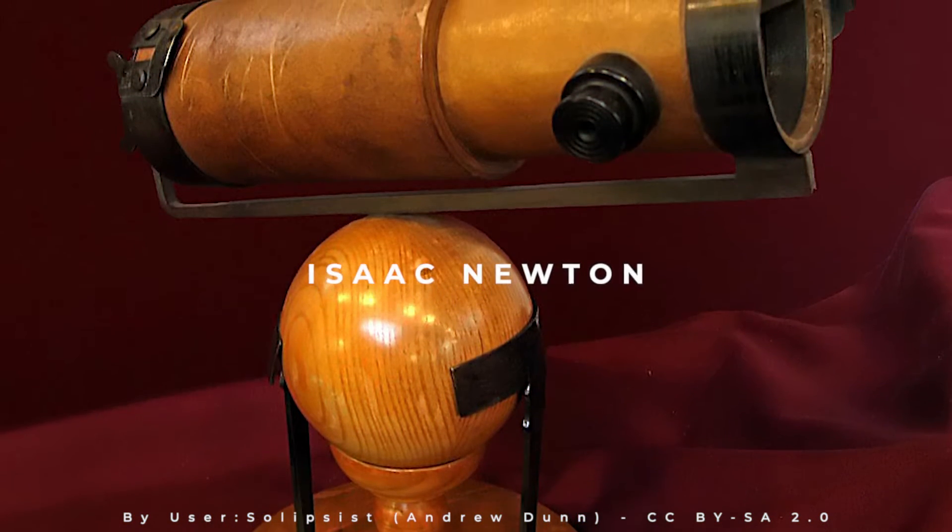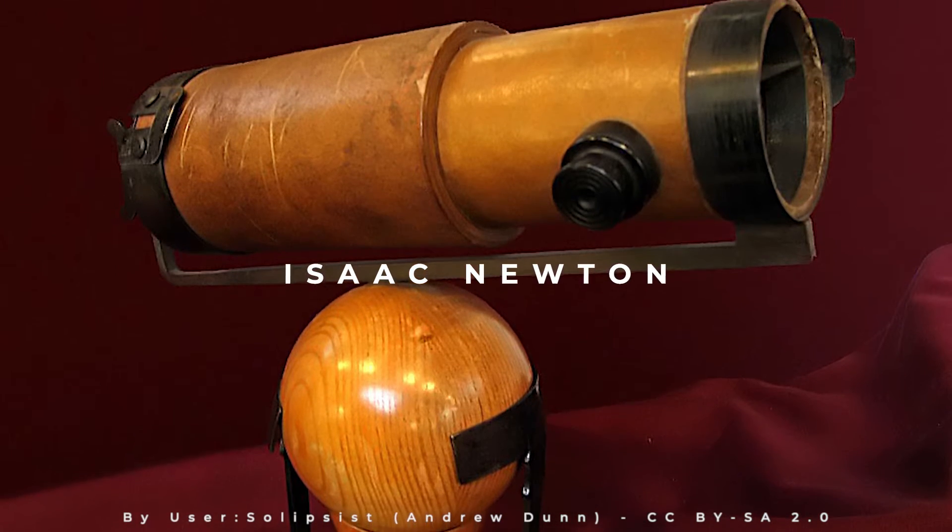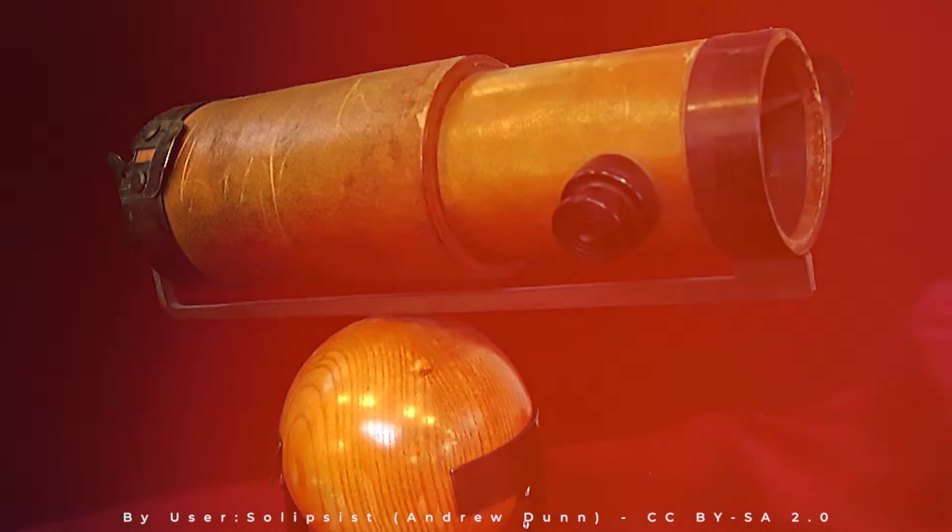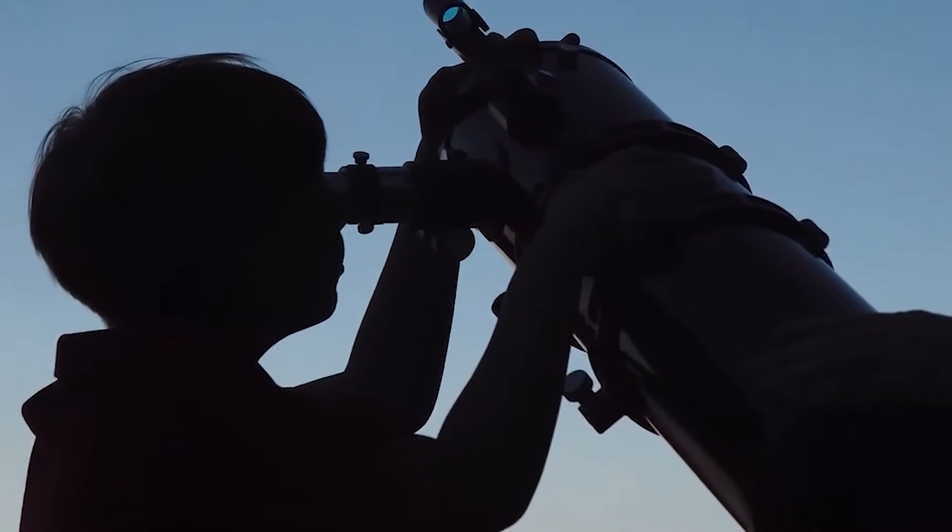A few years later, Isaac Newton proposed a design for a reflecting telescope using a curved main mirror and a smaller flat mirror. This design, developed over the next century through larger instruments, allowed astronomers to observe dim objects like nebulae.